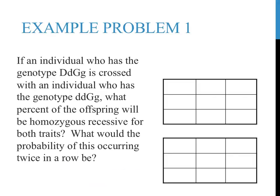We'll go ahead and try a sample problem. This one is quite easy, as the genotypes for each of the parents are provided — there is no need to decipher genotypes from clues within the problem. This problem reads: if an individual who has the genotype capital D, lowercase d, capital G, lowercase g is crossed with an individual who has the genotype lowercase d, lowercase d, capital G, lowercase g. Before reading any further, it's important to fill out the Punnett squares with the information provided. When filling out these Punnett squares, it's important that only one type of letter, or one trait, is assessed at a time.